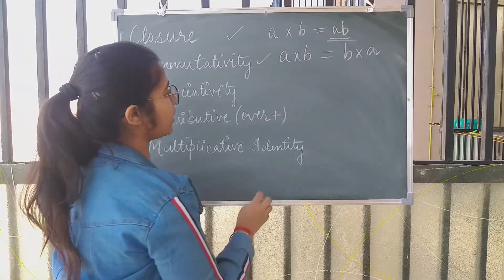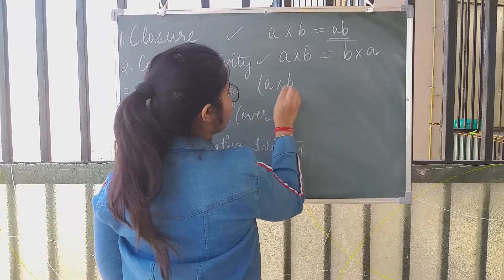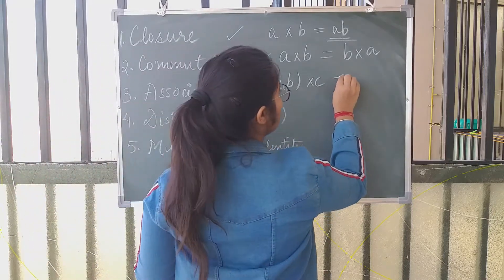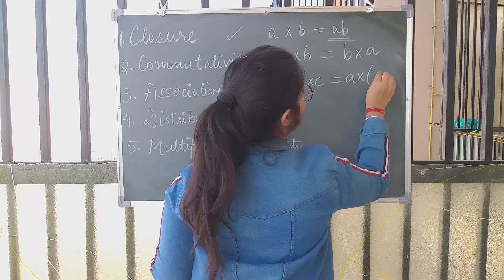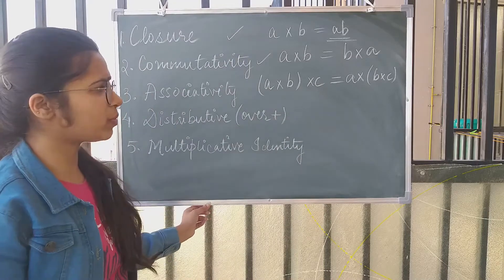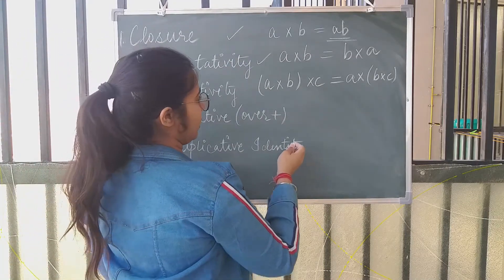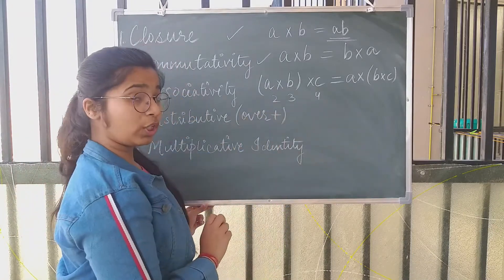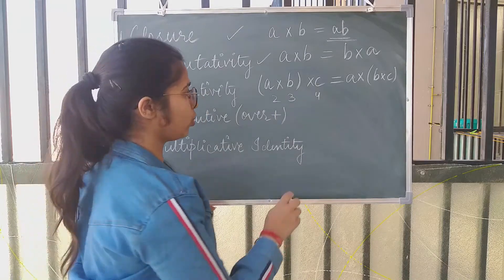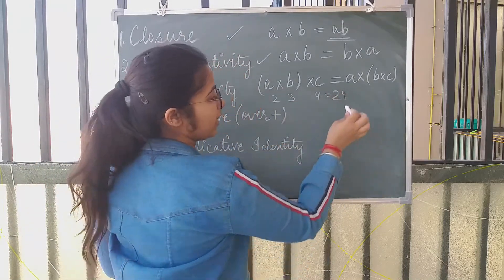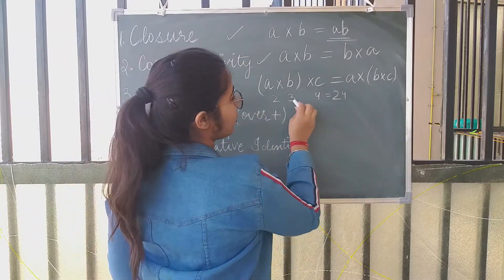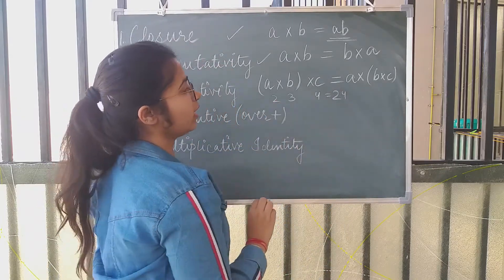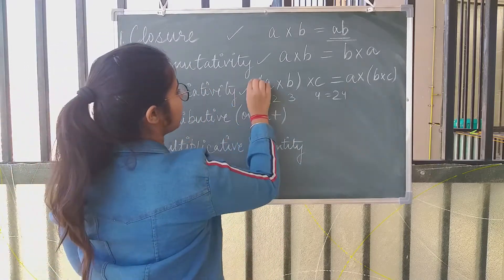Next comes associativity. Associativity means, if I have three numbers, I can multiply the first two and then multiply by the third — this will be the same as multiplying the first with the product of the last two. For example, take 2, 3, and 4. If I multiply 2 into 3, I get 6, then 6 into 4 is 24. On the right-hand side, 3 into 4 is 12, and 12 into 2 is also 24. So, multiplication is associative.